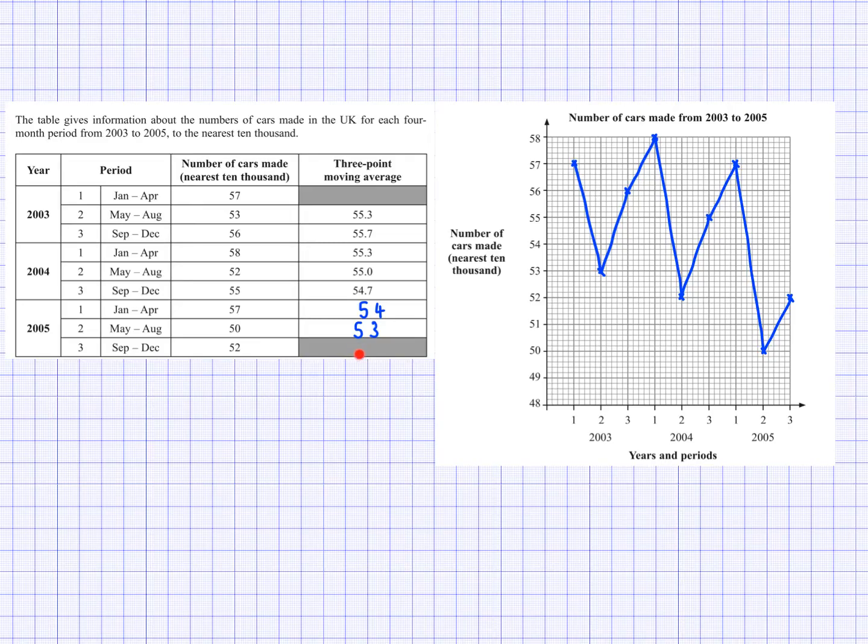Now, there isn't one here because to get this value, I would need to add 50, 52 and the next value to get this one. And to get this one here, we would need to have 53, 57 and the previous value to get this one. So notice that that's why those ones are not there.